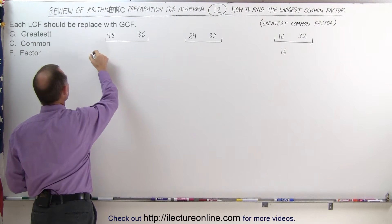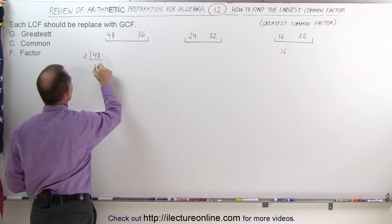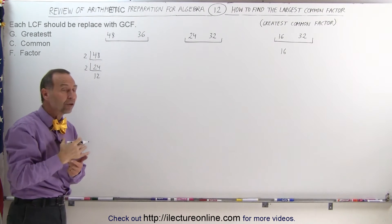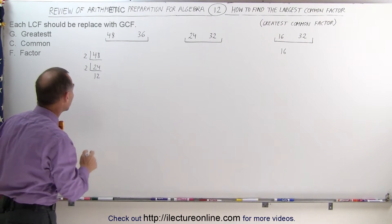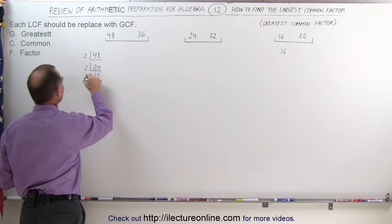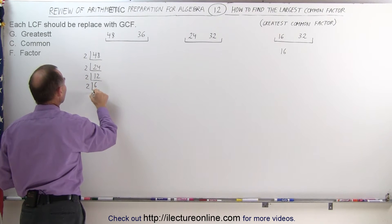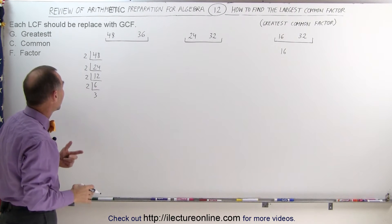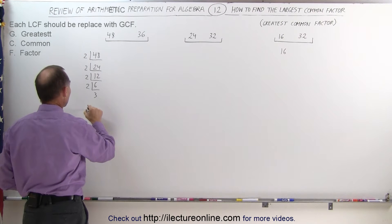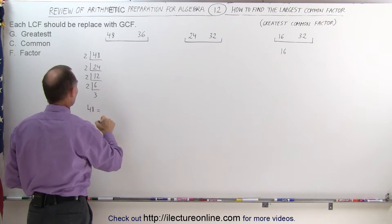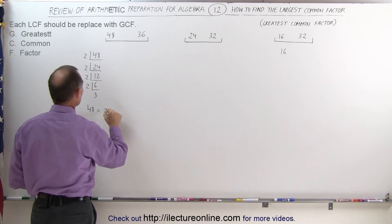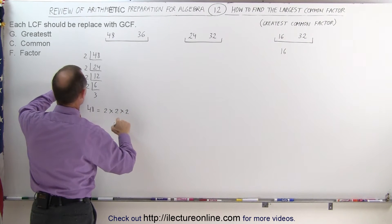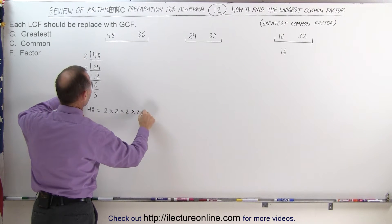Starting with 48, we can divide that by 2 to get 24. Divide that by 2 to get 12. You continue dividing by the smallest prime number until you can no longer do so. 12 divided by 2 is 6, and 6 divided by 2 is 3, which is itself a prime number — that means we're done. We can now write 48 as the product of prime numbers: 2 times 2 times 2 times 2 times 3.